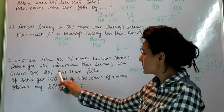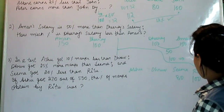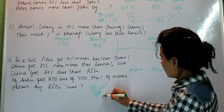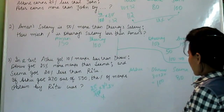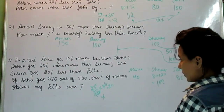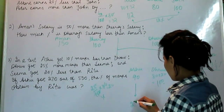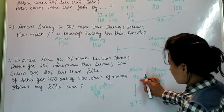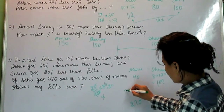Sima got 20% less than Ritu — Ritu is 100, so Sima will be 80. Dhru got 25% more marks than Sima, so 25% of 80 is 20, meaning Dhru is 80 + 20 = 100. Ashu got 10% less than Dhru — Dhru is 100, so Ashu will be 90. Ashu got 270 out of 500, which is given.